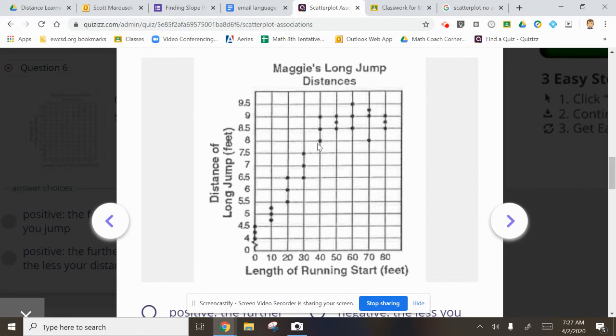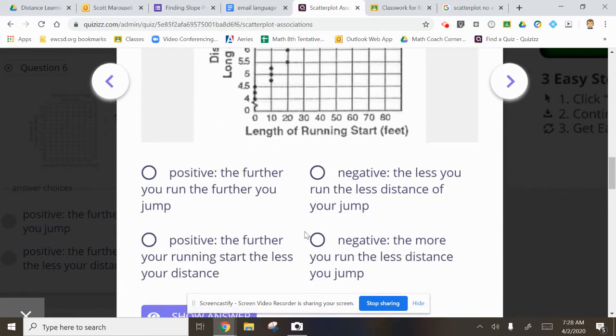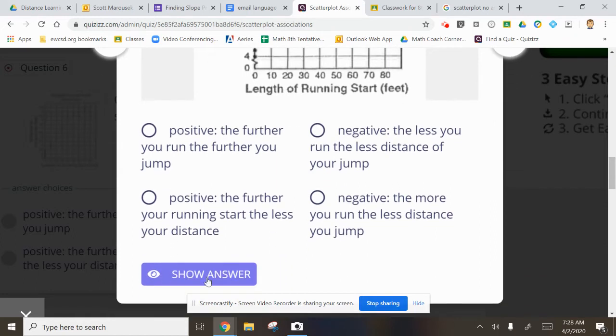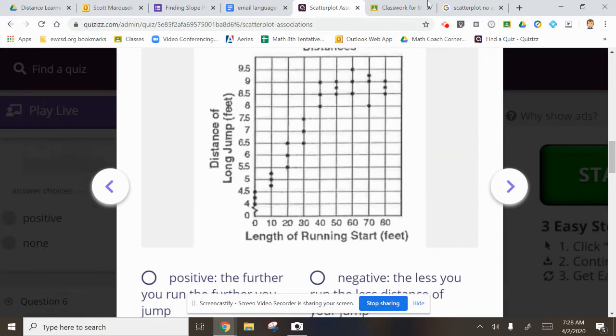You can see that going up, up, up, up. It does level off here because she can't keep it. No matter how much running starts, you can't just keep jumping forever. But this would be a positive association. And I believe let's show our answer positive. The further you run, the further you jump, read your answers. When you do this, this one's actually on your quiz. All right. Let's go to last on our notes.